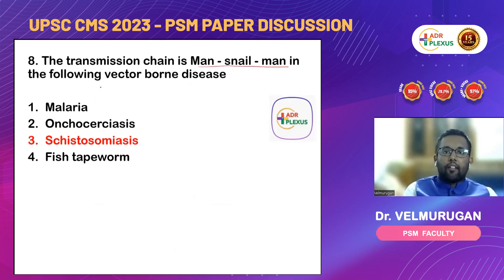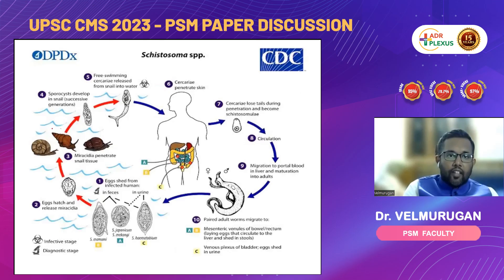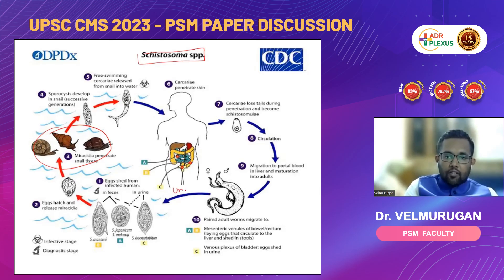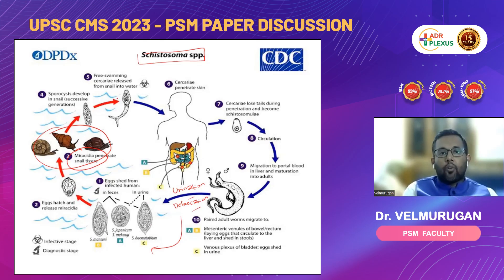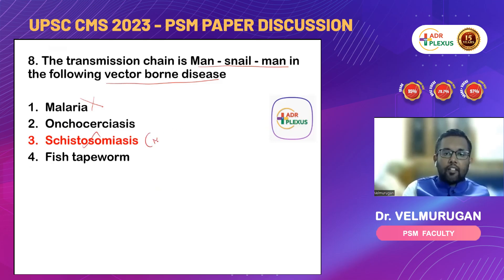Next question: the transmission chain is man → snail → man. This is definitely not malaria. The snail is involved in Schistosomiasis. Man, through urination or defecation, releases eggs into water. They hatch and release miracidia, which penetrate snail tissue and undergo development. Ultimately, cercariae are released and reach man again when he comes in contact with water. So this lifecycle is that of Schistosomiasis — man → snail → man.